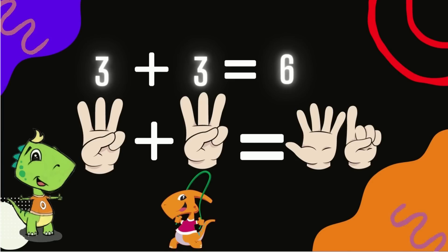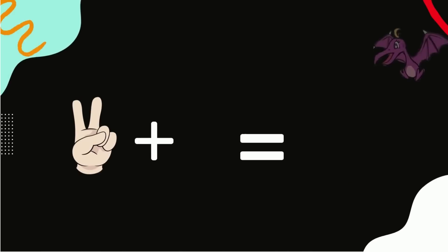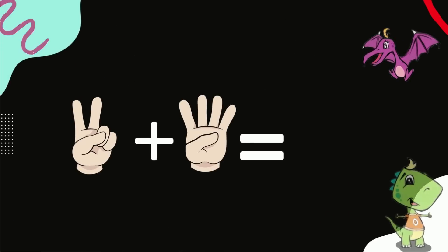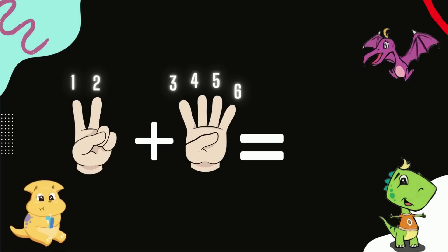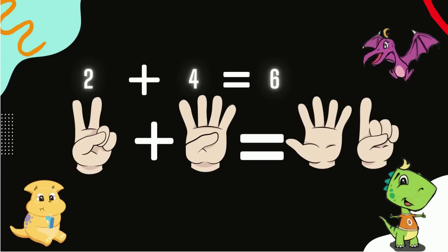Let's have a look at another one. Take two fingers out in one hand and four fingers out in the other hand. Let's count. One, two, three, four, five, six. Two add four equals six.